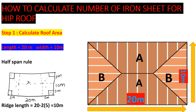Once we have the length and width, we use the half-span rule. That means we take half the width. The width is 10 meters, so half is 5 meters. From the center line to each edge is 5 meters on both sides. This same rule applies on the other sides — from where the lines meet, each half-span is also 5 meters.